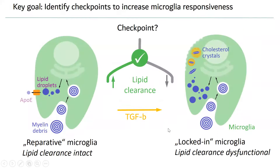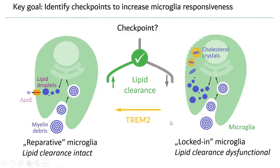TGF-beta signaling appears to be one checkpoint: high TGF-beta tone keeps microglia in a more locked-in state in lesions of obese mice. However, when we used the same protocol of blocking TGF-beta signaling in aging, we could not see a rescue, indicating this pathway is specific to the condition associated with obesity and not a general mechanism for aging.